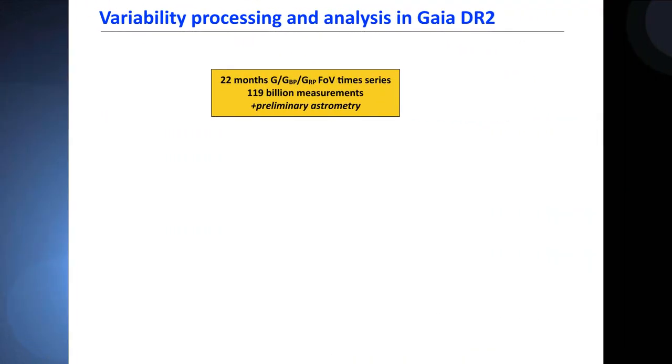In this variability processing, we analyzed 22 months of G, BP, and GRP field of view transits time series. We have globally 119 billion measurements that we analyzed. It's enormous. We used the preliminary astrometric solution.